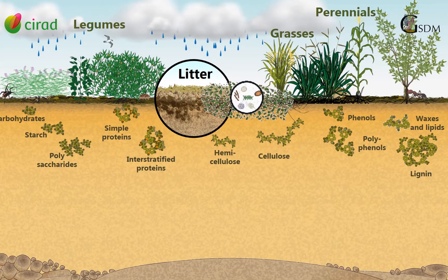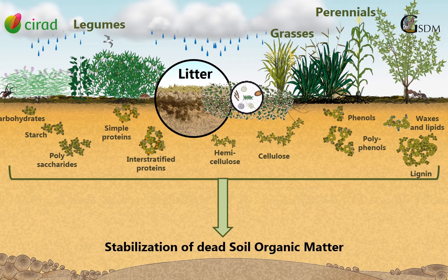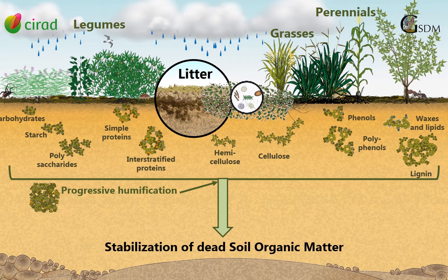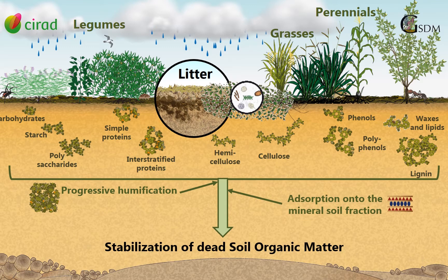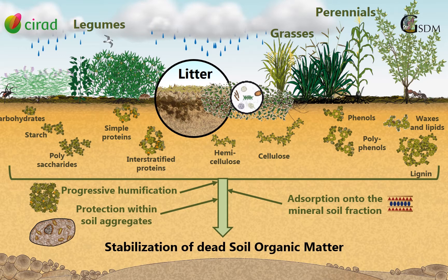The soil organic matter is stabilized against mineralization or leaching through three main processes. First, a part of soil organic matter is selectively preserved through the acquisition of biochemical stability, through the process of progressive humification. The second process is the adsorption onto minerals, such as clay, iron, and aluminum oxides. The third process is the physical protection within aggregates. These three processes may happen simultaneously, and their relative contribution to soil organic matter stabilization varies depending on the climate, the soil type, and the soil management.